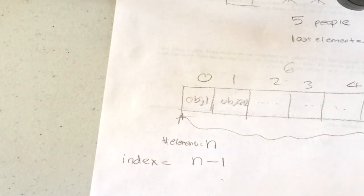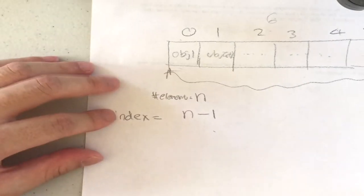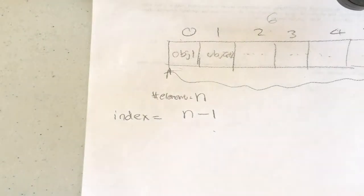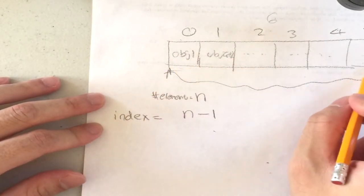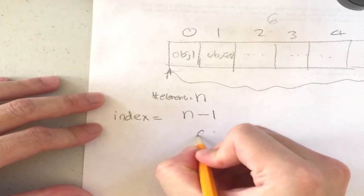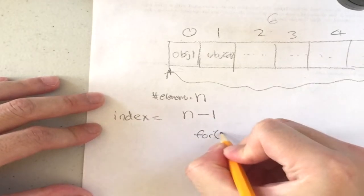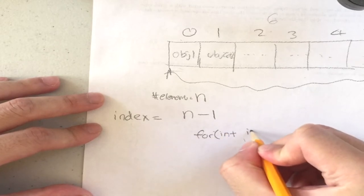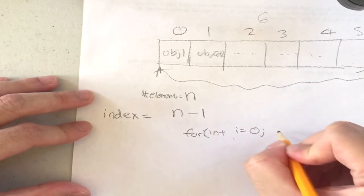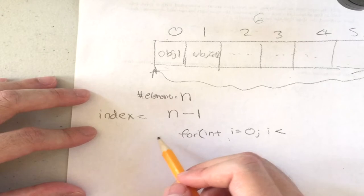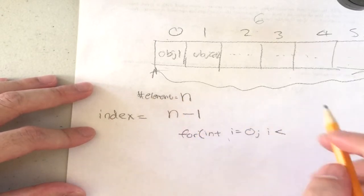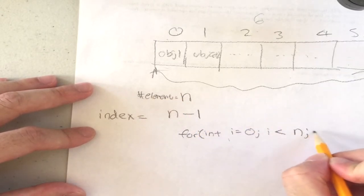Now I'll explain how you loop through an array in C++ or Java. It's simple — we start at zero and go until we reach the end. We use a for loop: set int i equal to zero, keep adding one until i reaches the total number of elements n.